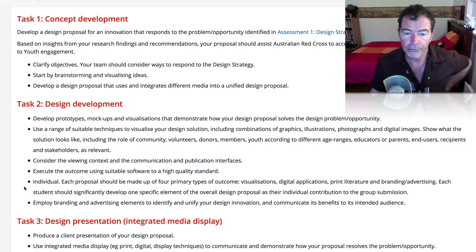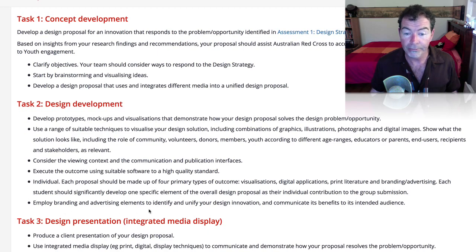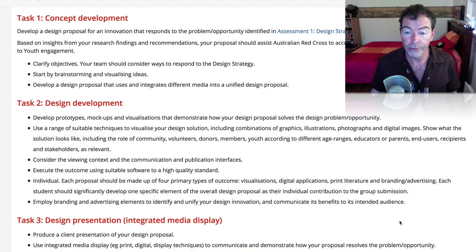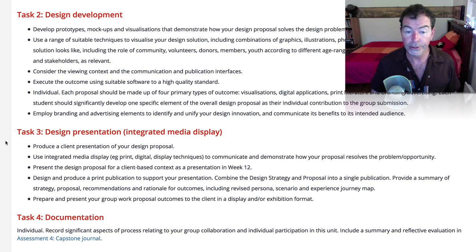Each proposal should be made up of four primary types of outcome: visualisations, digital applications, print literature, and branding and advertising. Each student should significantly develop one specific element or more — for example, Cara and Daniel, you have to do two each — as their individual contribution to the group submission. Employ branding and advertising elements to identify and unify your design innovation and communicate its benefits to its intended audience. Produce a client presentation of your design proposal using integrated media display — for example, print and digital display techniques — to communicate and demonstrate how your proposal resolves the problem or opportunity.